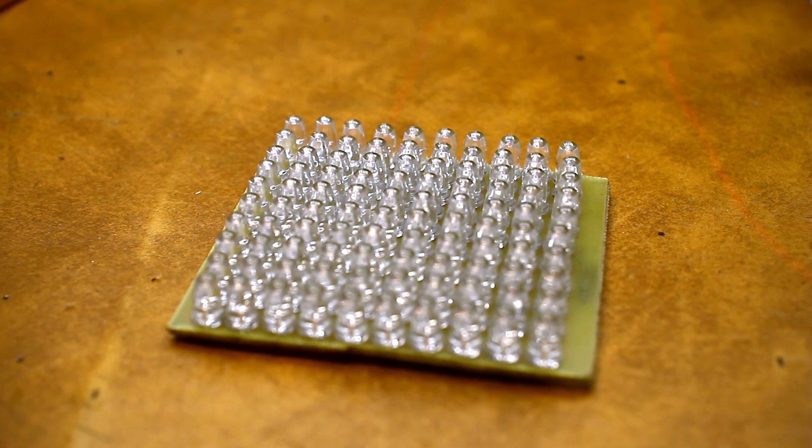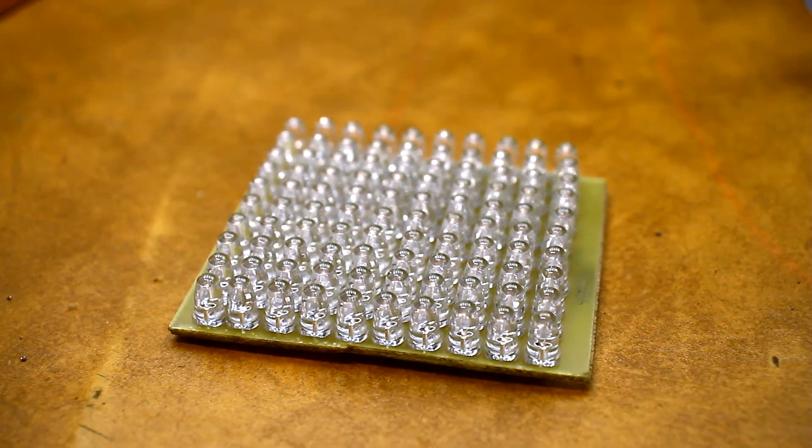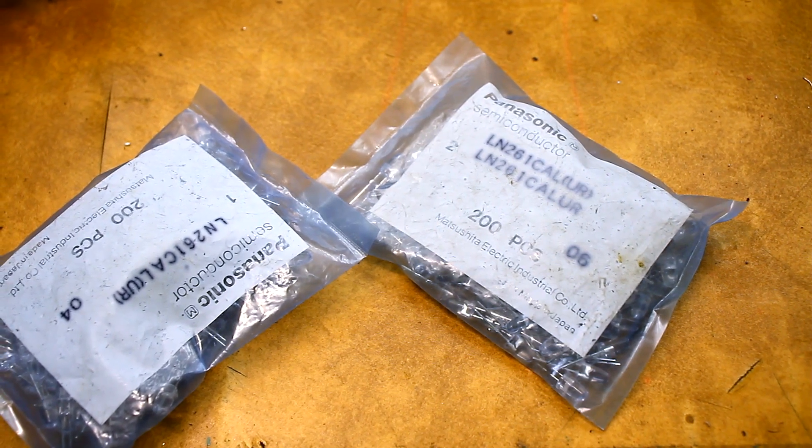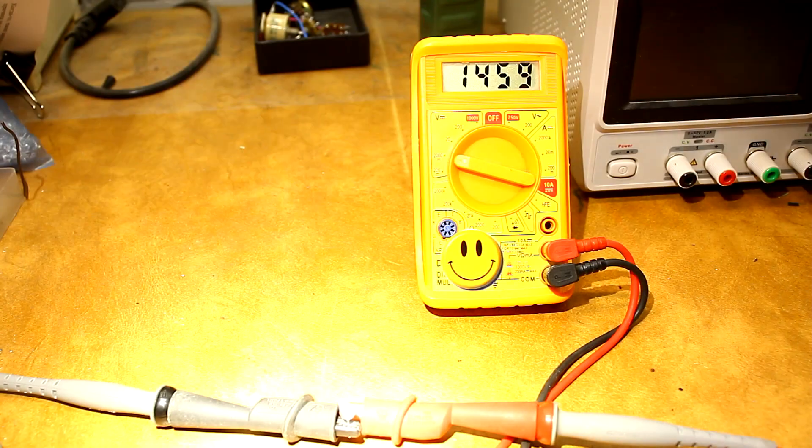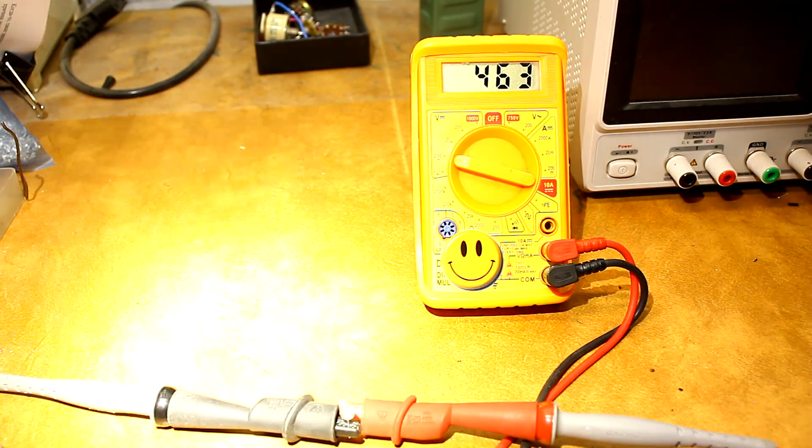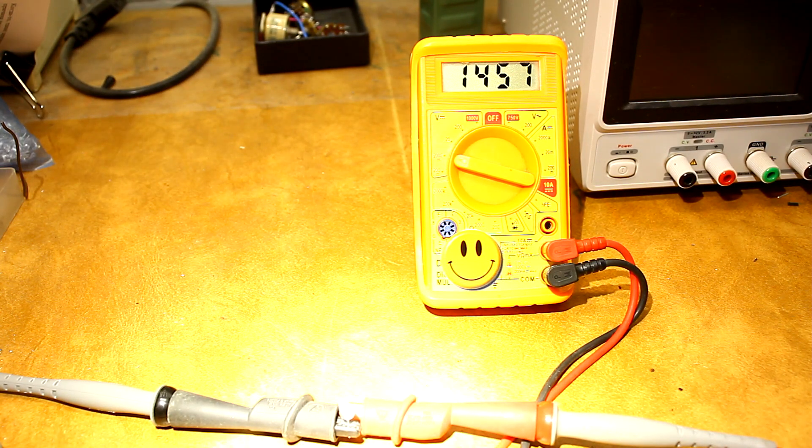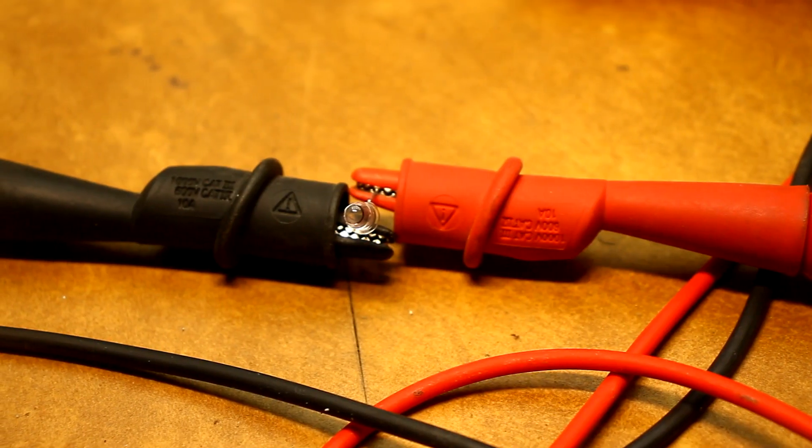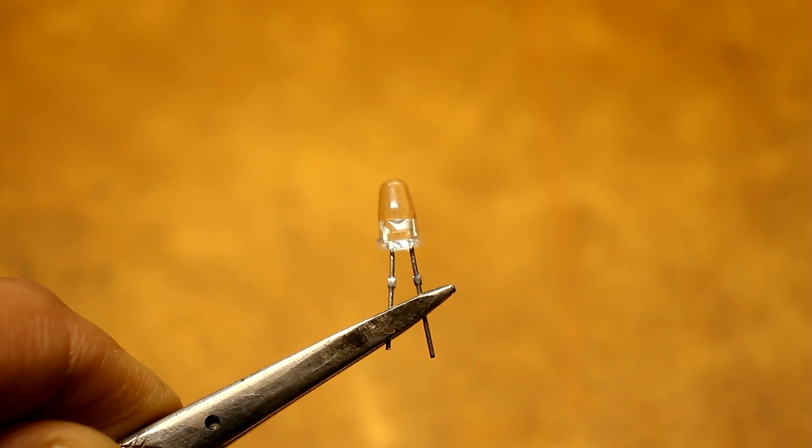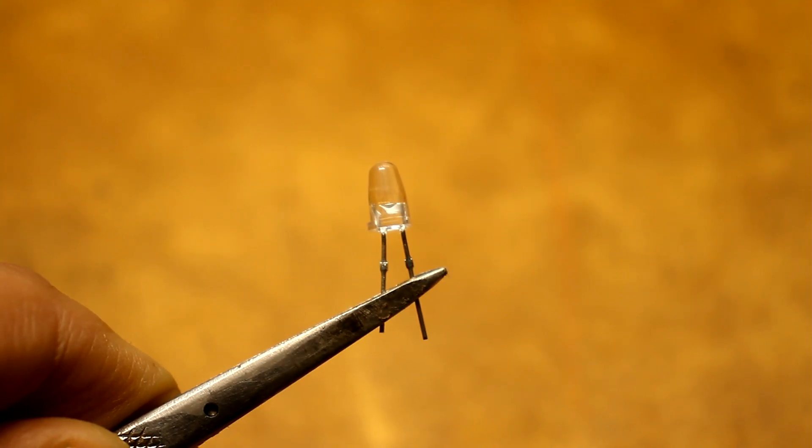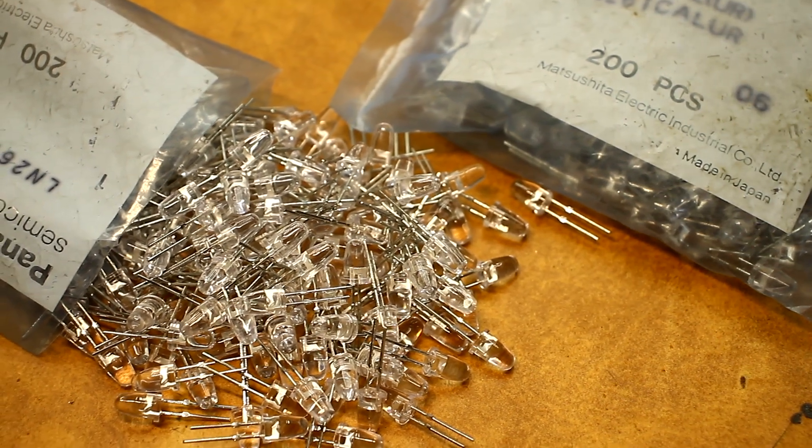Experimenting with different LEDs, I accidentally discovered that the mentioned red diodes, given their size, produce the highest current. In bright sunlight, one LED provides a voltage of up to 1.5V, while the current can reach 300 microamps. True, this is only in very bright light, but in December, at noon, I managed to get no more than 30 microamps.